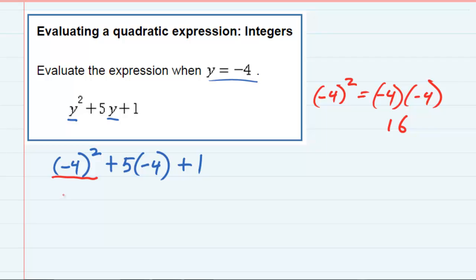So that term becomes positive 16. The next is 5 times negative 4. So 5 times negative 4 gives me a negative 20. And then I'll just bring down that plus 1.